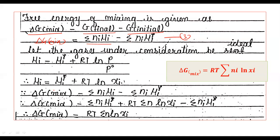Now let us assume the gases are ideal. For an ideal gas, the chemical potential relation is: mui equals mui star plus RT ln(P/P0). According to Raoult's law, P/P0 equals Xi, the mole fraction of that component. So the equation becomes: mui equals mui star plus RT ln Xi.